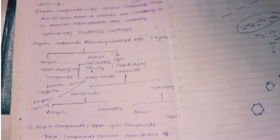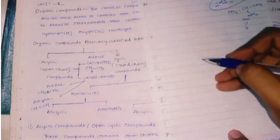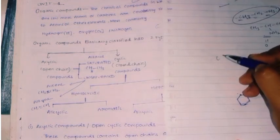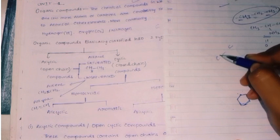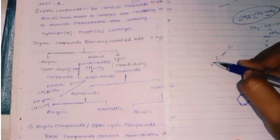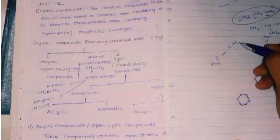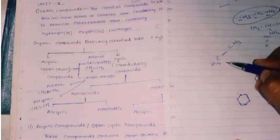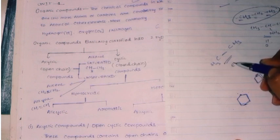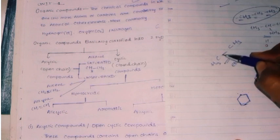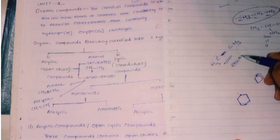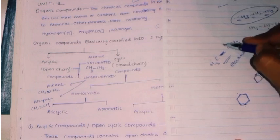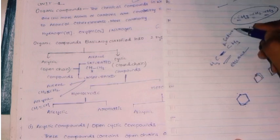Saturated compounds contain only single bonds. For example, ethane — CH3-CH3 — has two carbons with a single bond, so it is saturated. Similarly, propane is also a saturated compound. Saturated means single bonds only.